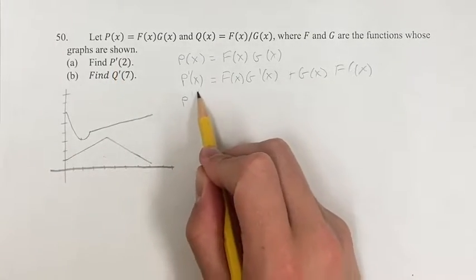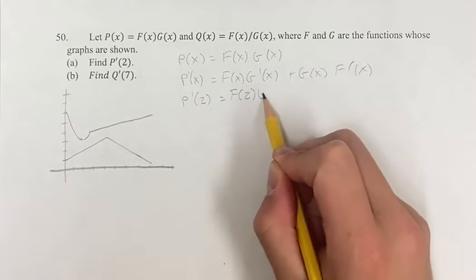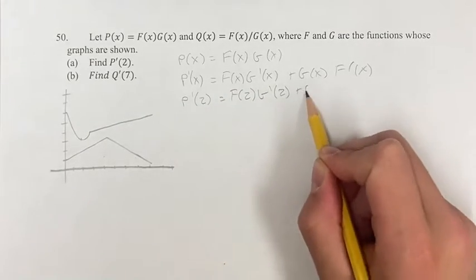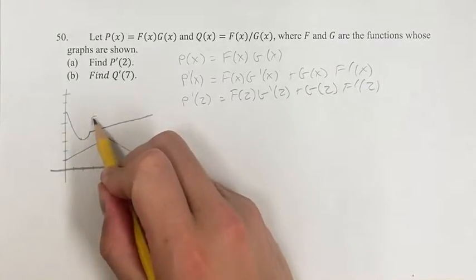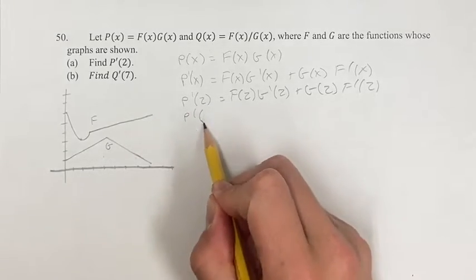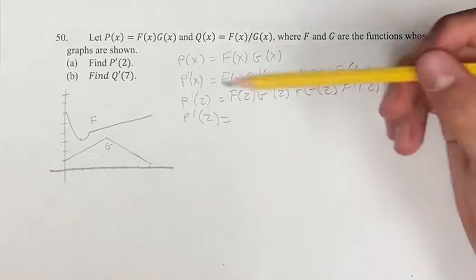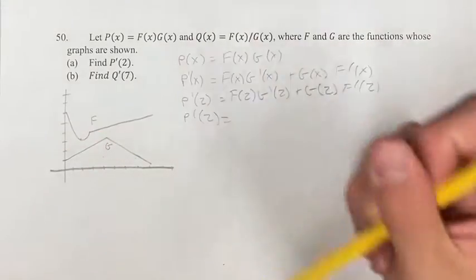When we're finding it at x equals 2, this is going to be F(2) times the derivative of G at 2 plus G(2) times the derivative of F at 2. And then we have the graphs of F and G below, plugging in. So F(2) is this point right here, which is 3.